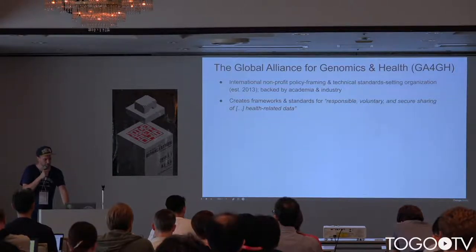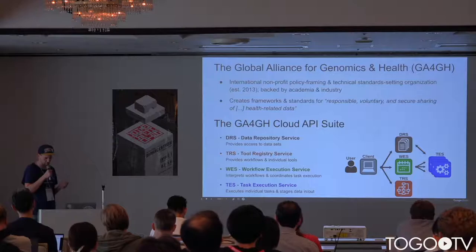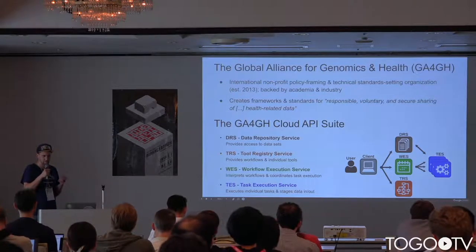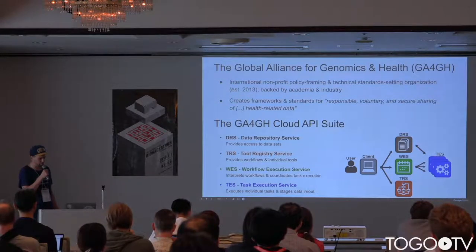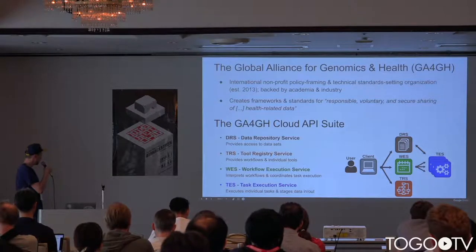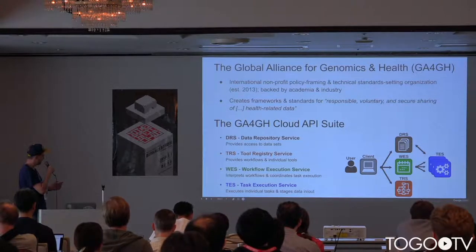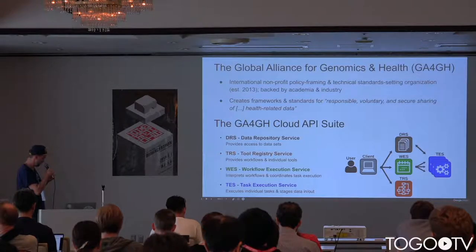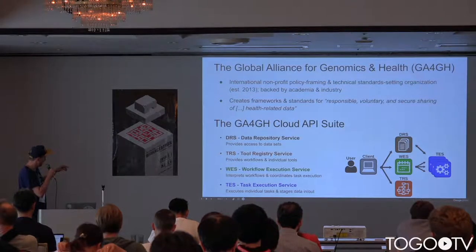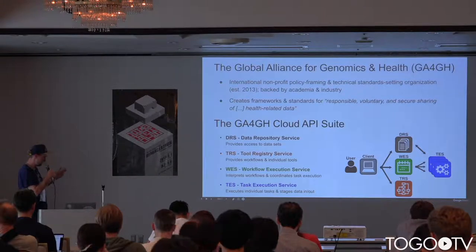GA4GH creates frameworks and standards for responsible, voluntary, and secure sharing of health-related data. Their work is organized into several work streams, and one relevant to this project is the GA4GH Cloud API — a suite of cloud API standards. These include a Data Repository Service which provides access to datasets, a Tool Registry Service that provides workflows with individual tools, a Workflow Execution Service that interprets workflows and coordinates task execution, and a Task Execution Service which executes individual tasks and stages data in or out.